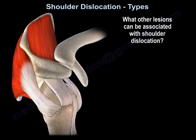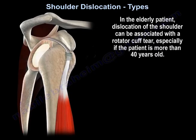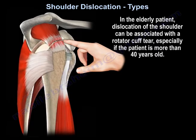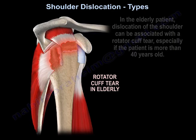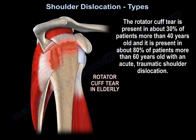What other lesions can be associated with shoulder dislocation? In the elderly patient, dislocation of the shoulder can be associated with rotator cuff tear, especially if the patient is more than 40 years old. The rotator cuff tear is present in about 30% of patients more than 40 years old, and in about 80% of patients more than 60 years old with an acute traumatic shoulder dislocation.